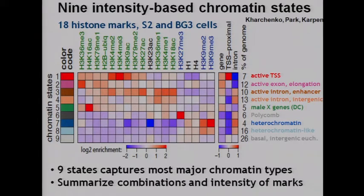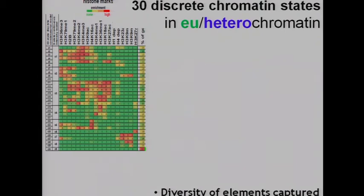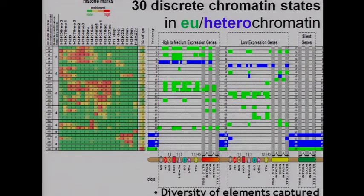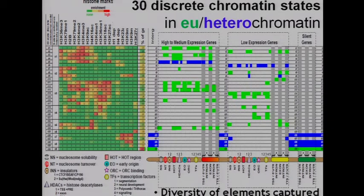There's a specific chromatin state defining male X genes containing H4K16 acetylation. We can define polycomb repressed elements marked by H3K27 trimethylation, heterochromatic elements marked by H3K9 trimethylation, and other basal and repressed elements. Going further, we defined 30 different chromatin states corresponding to these nine broader states. When intersecting those with a large array of functional elements — nucleosome solubility, hotspots, nucleosome turnover, different insulators, histone deacetylases, early origins of replication, and transcription factors — histone modifications alone can pick out each of these classes in different states, suggesting chromatin encodes a much more diverse array of functions than previously thought.